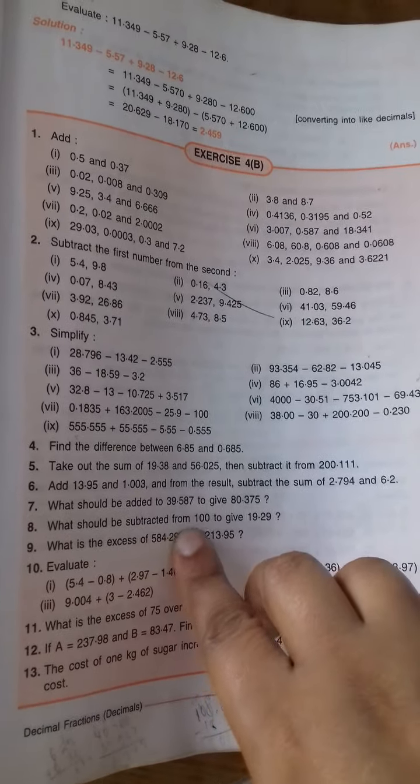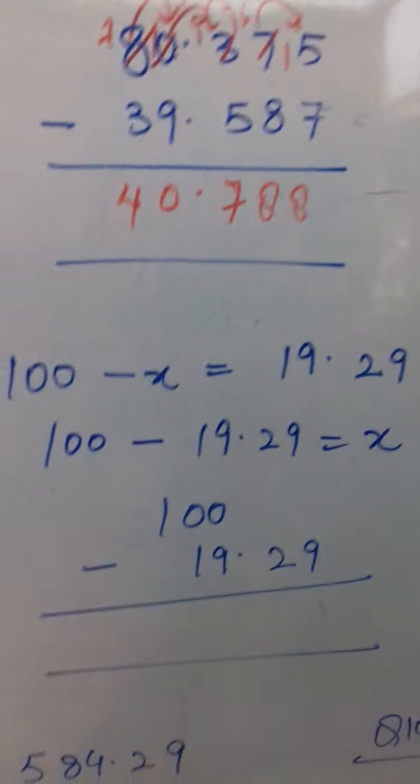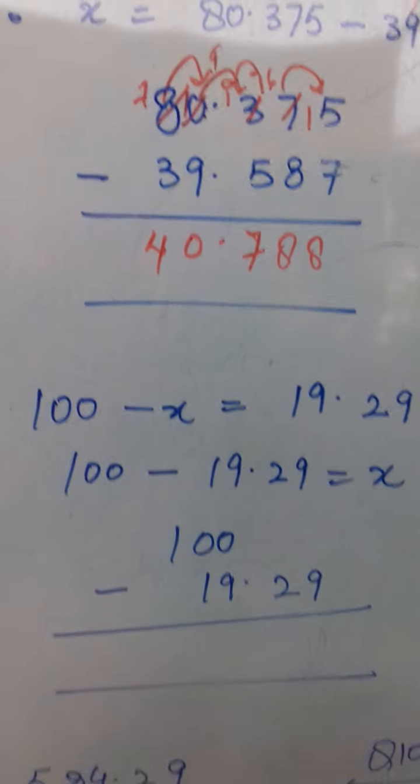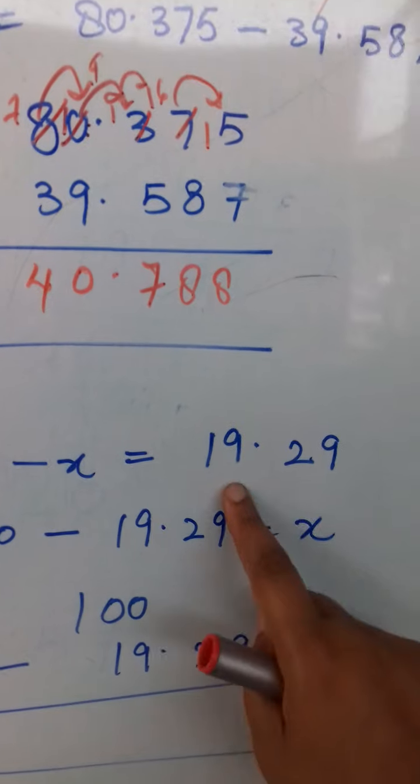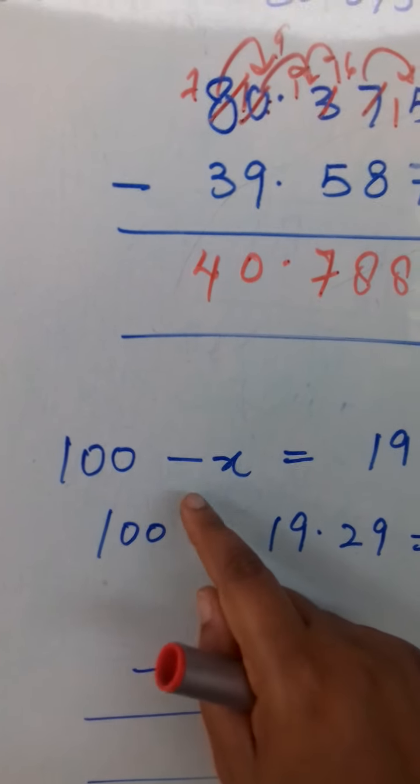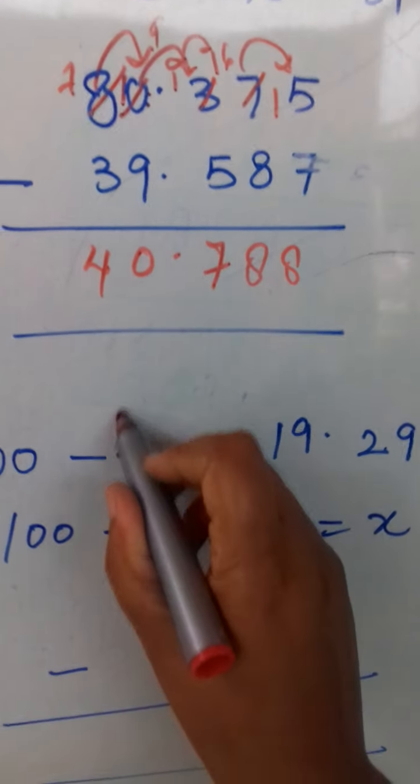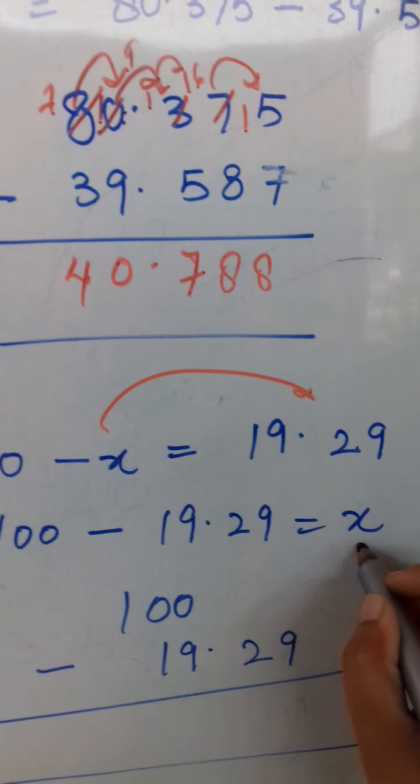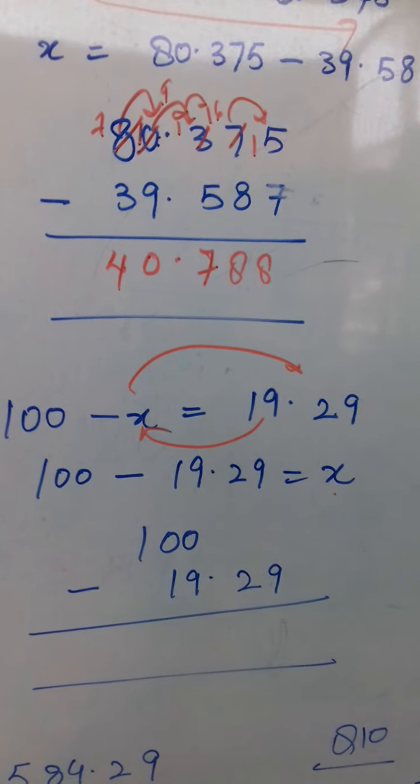Now question number 8 says what should be subtracted from 100 to give this? What should be subtracted? So again, let us subtract x. You can subtract y also, z also, any unknown variable. So 100 minus x equals 19.29. We are saying that we will subtract x from 100 and we will get 19.29. So again, x I have sent to that side so it became positive, and 19.29 I brought to this side so it became negative.